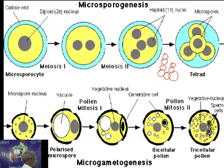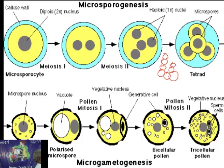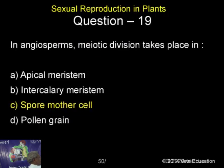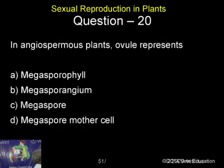In a pollen grain, this is called the sporeline, then you have got the pollen. They are explaining how meiosis is taking place. When the appropriate question comes, I will give more explanation. Spore mother cell is the correct answer.